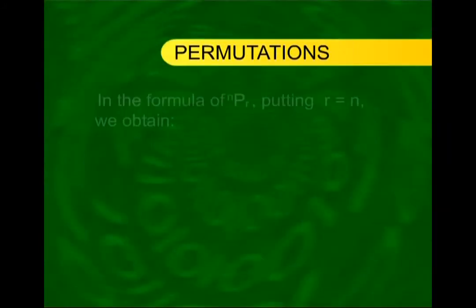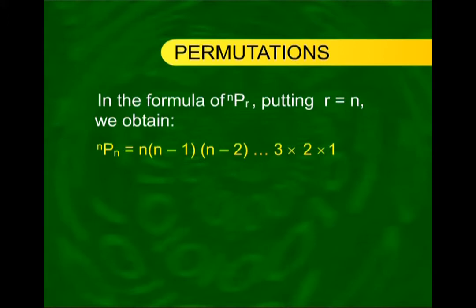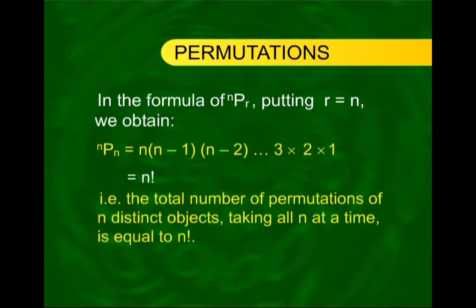A special case of the permutation formula is when r equals n. Putting r equal to n in the NPR formula, we obtain NPN = N×(N−1)×(N−2)×...×2×1 = N factorial. That is, the total number of permutations of n distinct objects taking all n at a time equals N factorial.